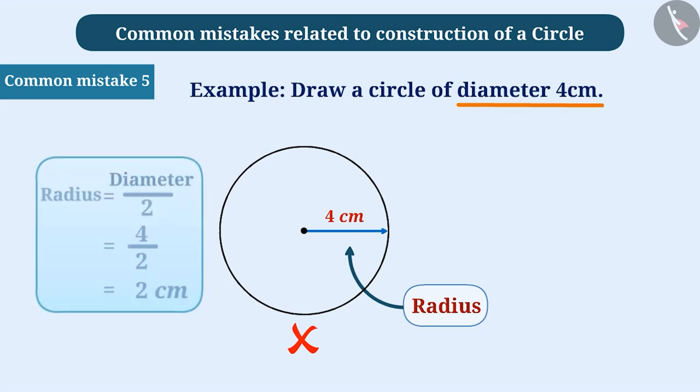Keep in mind that if the measurement of the diameter is provided, we must divide it by 2 and find the measurement of the radius. This will give us the correct circle.